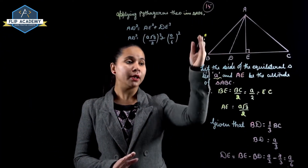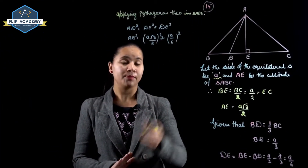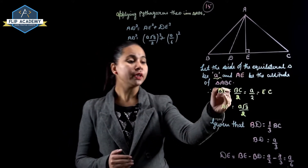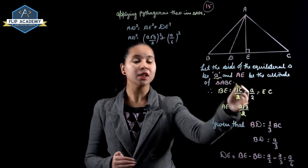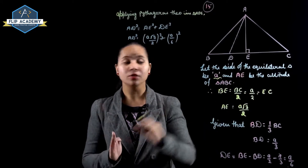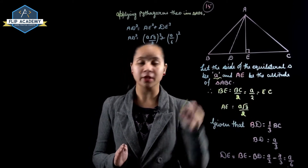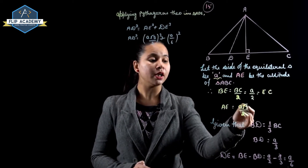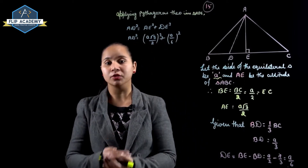ABC is an equilateral triangle with side A. We draw AE perpendicular to BC. So BE is equal to EC is equal to A/2, and AE is equal to A√3/2, by using the Pythagoras theorem.